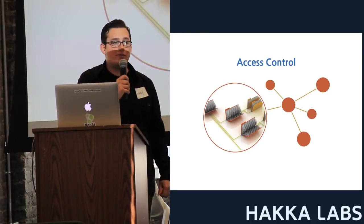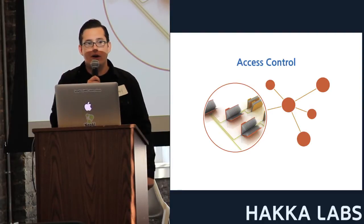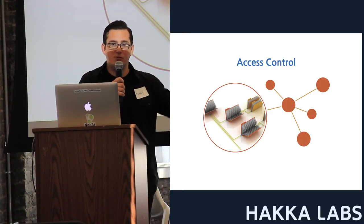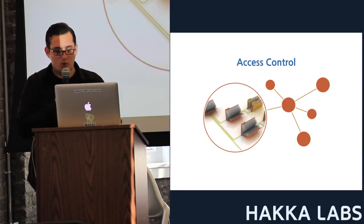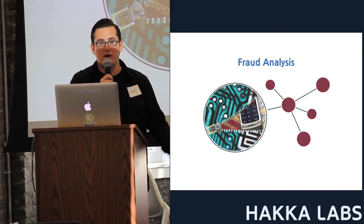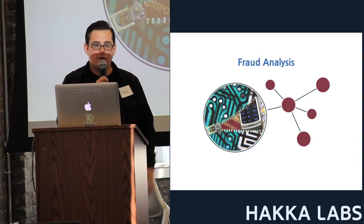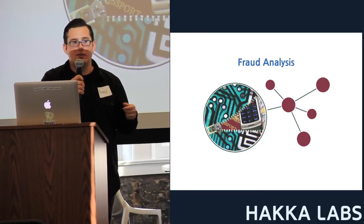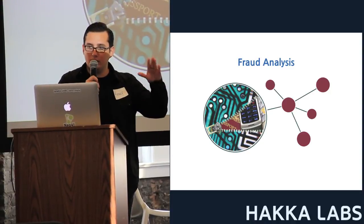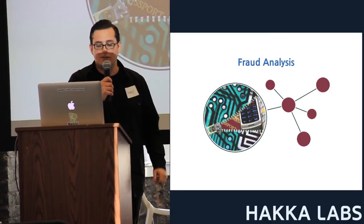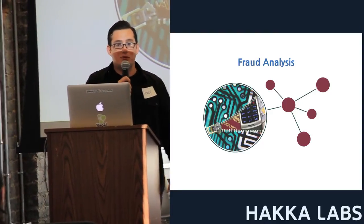Access control: you have a set of applications and web services, and you want to impose a layer of security on top of them for certain users — mapping users to services they can access, with chains of dependencies and inherited permissions. Graph is a natural medium to model that. Fraud analysis: analyzing first-party bank fraud by looking at visual patterns in the graph. Synthetic identities are created from a few real identities, and certain information is shared among a ring. A graph can identify that pattern and notify responsible parties to investigate.